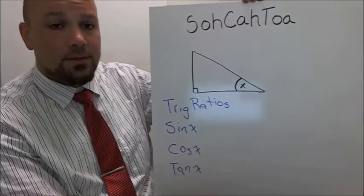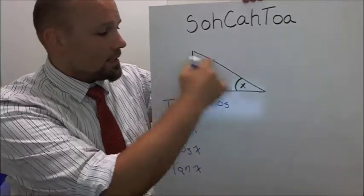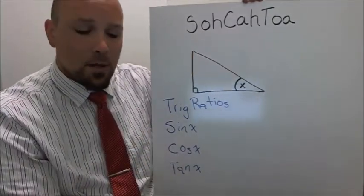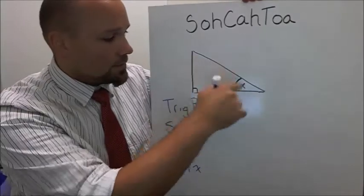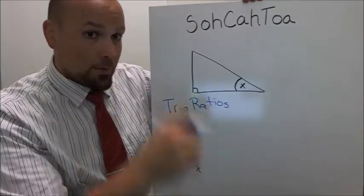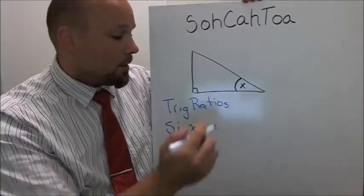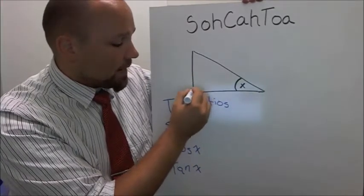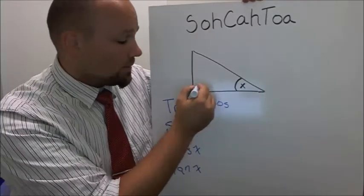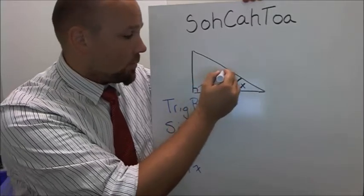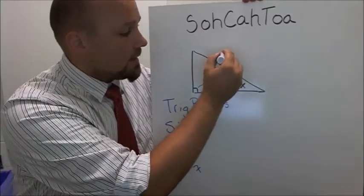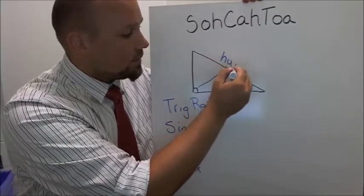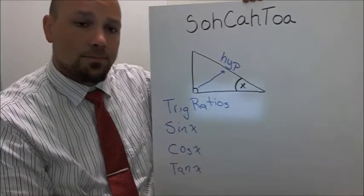And now the next thing we need to do is we need to decide in this triangle what's the hypotenuse. So in this triangle, what do you think the hypotenuse is? Well, the hypotenuse is the side that's opposite of the right angle. The right angle is always labeled, and the right angle always points to one of the sides, and that side is called the hypotenuse.